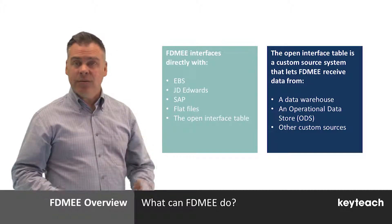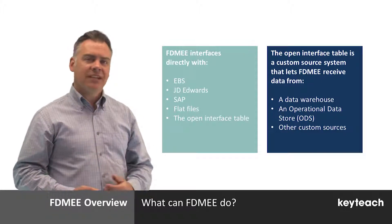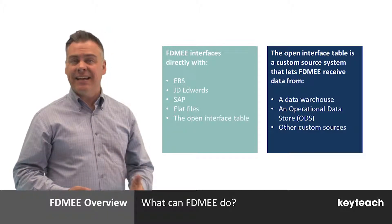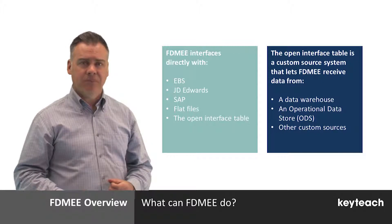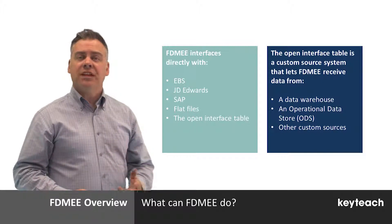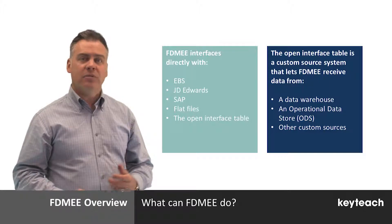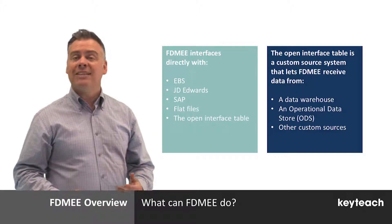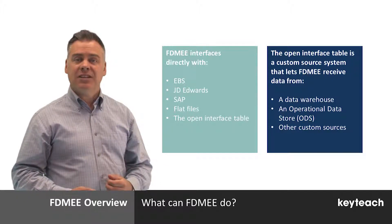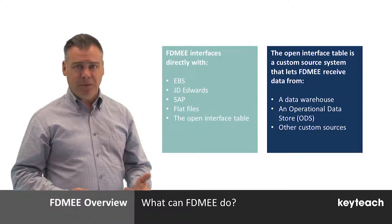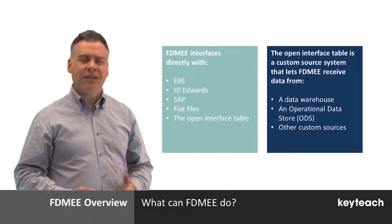FDMEE integrates directly with source systems and target applications, letting you use source metadata and data from a source system and load it into a target application. Write-back functionality allows data to be bi-directional, with data flowing from the source application as well as to it. For example, planning data can be written back to E-Business Suite (EBS), and HFM information can be written back to Fusion Financials.